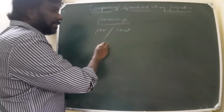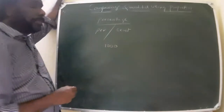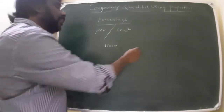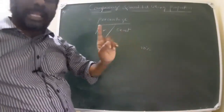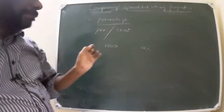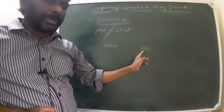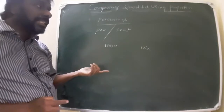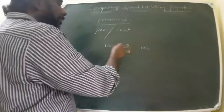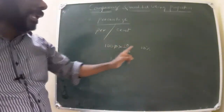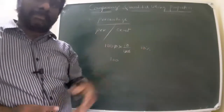For example, we have one thousand rupees. What is ten percent of one thousand? Ten percent means for every hundred, ten will be the value. So ten percent means ten by hundred, multiplied by one thousand — cancel the hundred — and you get one hundred rupees.